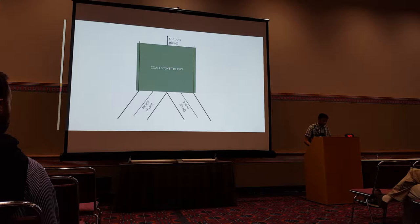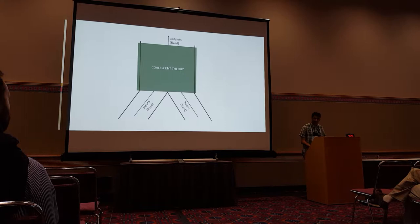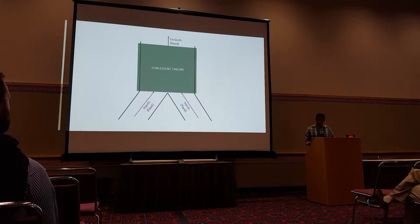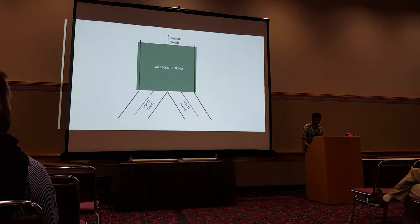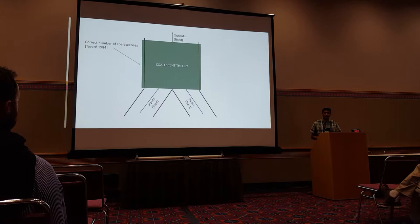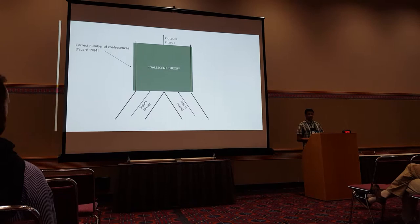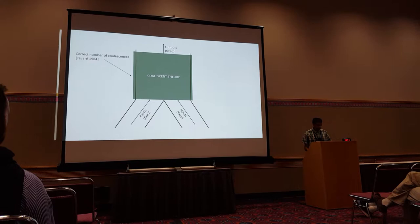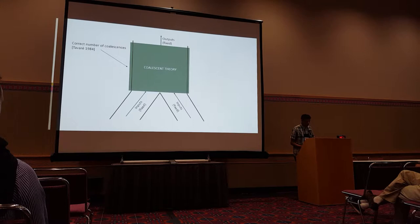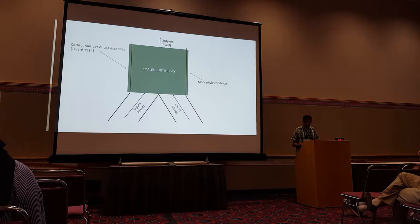My result works by fixing the inputs and outputs of the node. Given a set of input lineages into your node, what's the probability that you get a particular set of outputs and that the monophyly of the group you're interested in is not violated? This is a two-step calculation. First, you ensure the correct number of coalescences happens from inputs to outputs — that probability is given by a formula by Tavaré in 1984. Then, all possible sequences of coalescences with that same number are equally probable, so you count the ones that preserve monophyly and divide by the total.